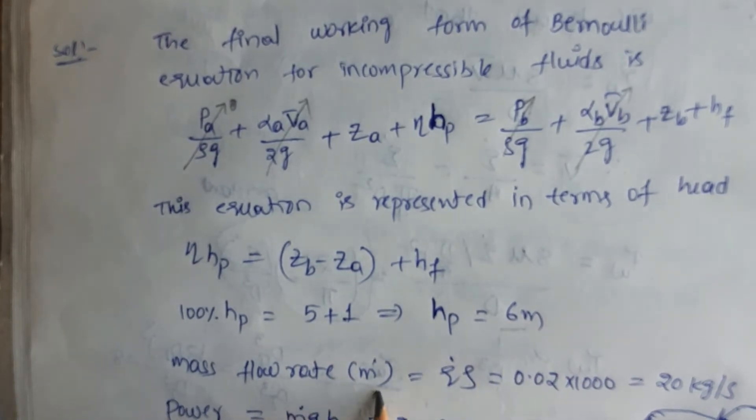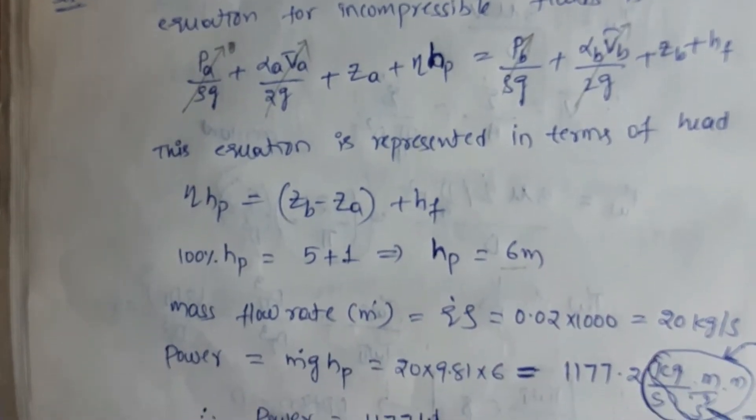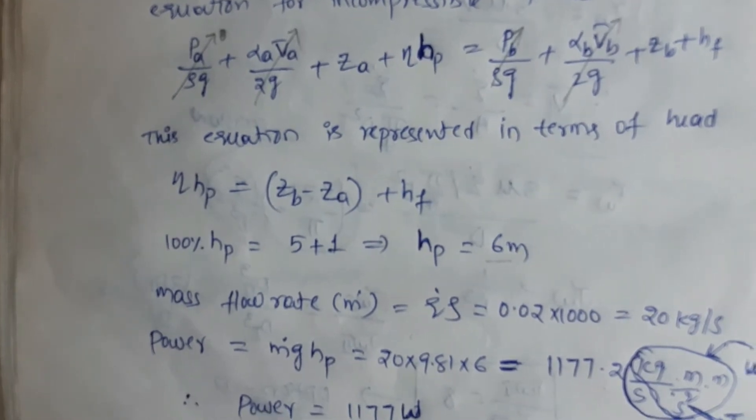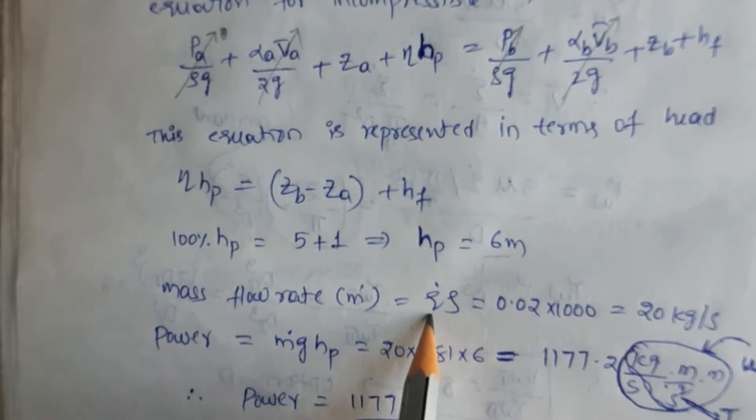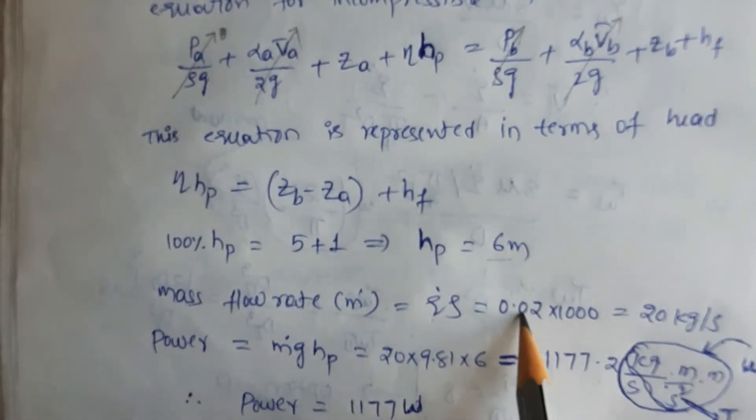Mass flow rate equals volumetric flow rate times density. The volumetric flow rate is given as 0.02 cubic meters per second. So, 0.02 × 1000 = 20 kg per second.